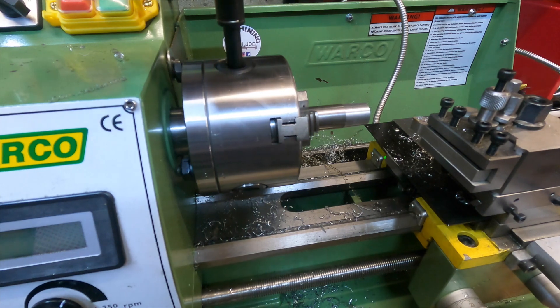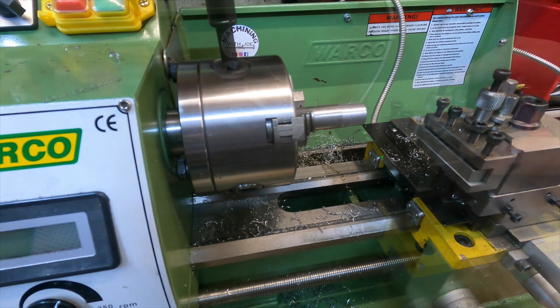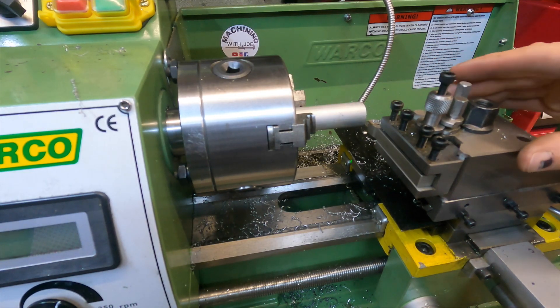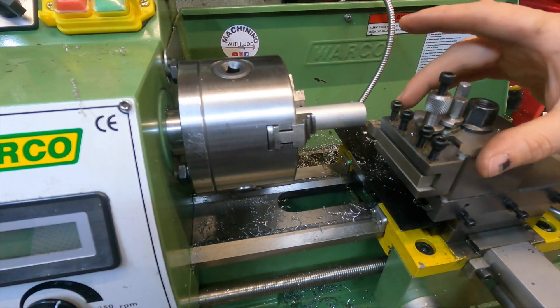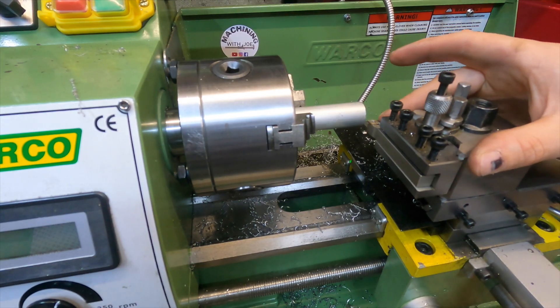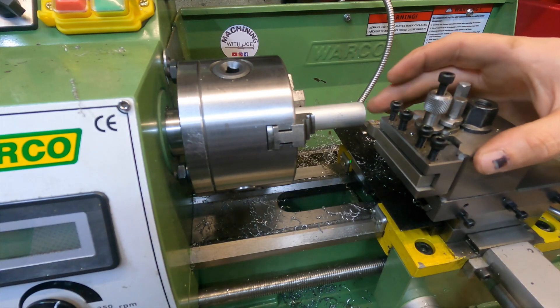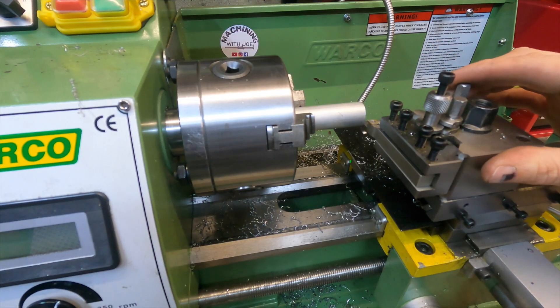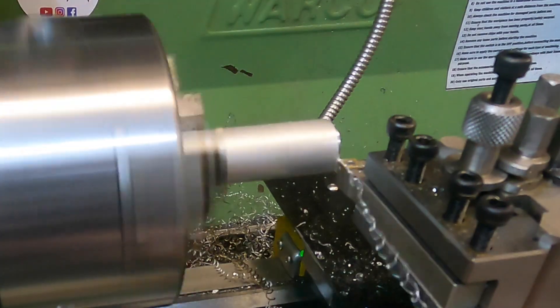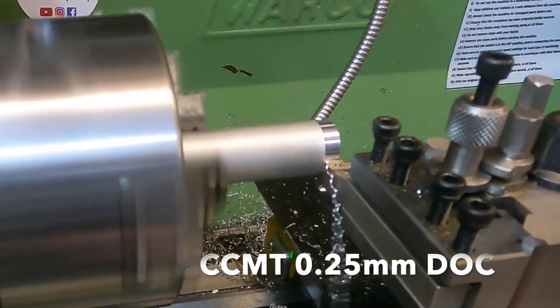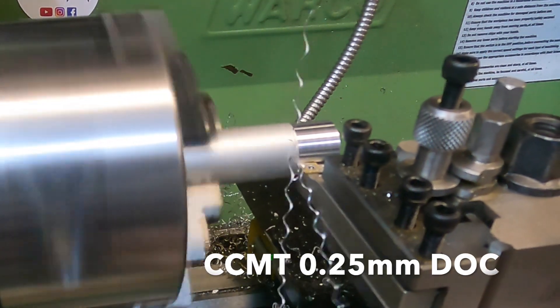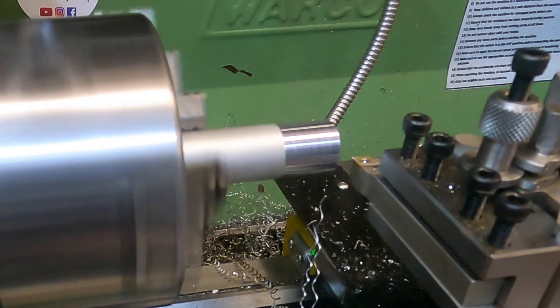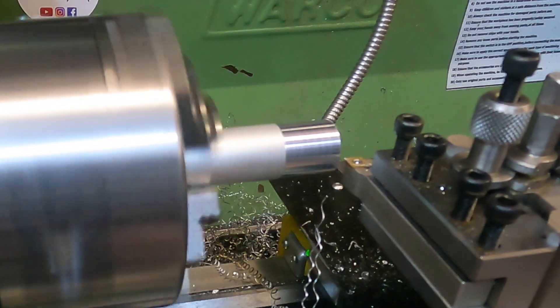Right, we've got some aluminum chucked up here and we're going to do exactly the same procedure as we done last time. We're sticking with the CCMT insert in there just because it was in there from before, and we're going to do a facing off, 0.25 mil and a 0.5 millimeter depth of cut. Let's give this a go.